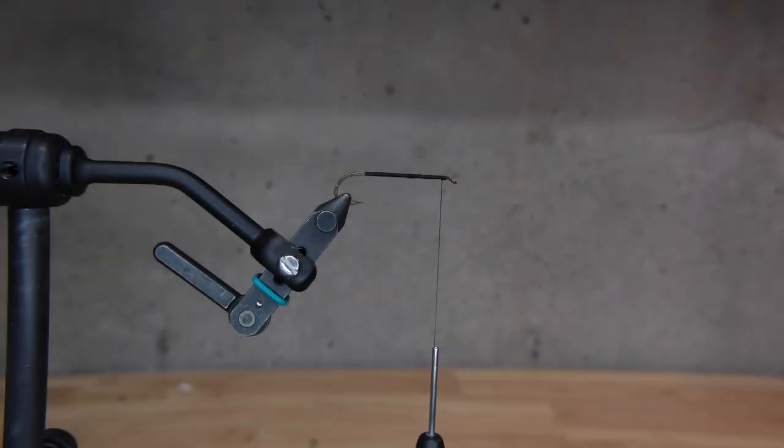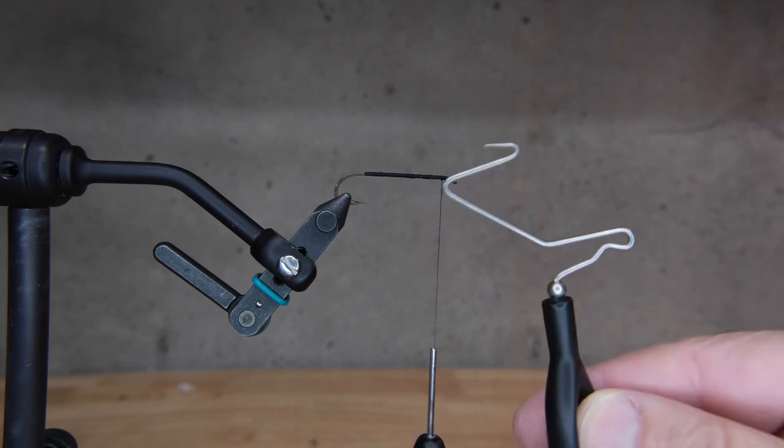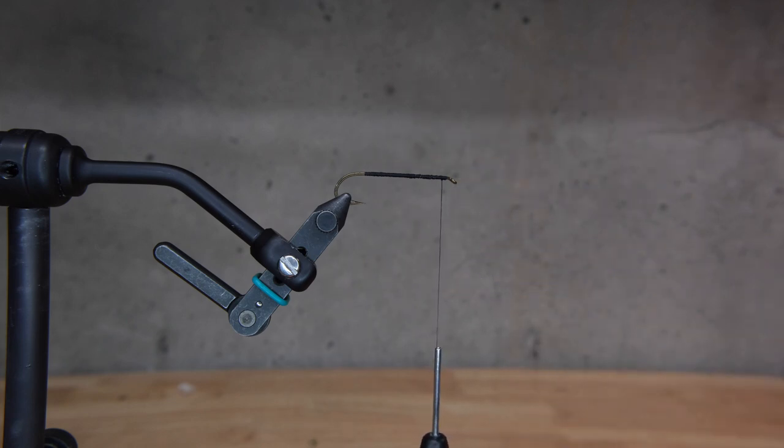All right, once you get your fly complete, then you have to find a way to finish it. You can use your whip finish tool, also known as the instrument of torture, if you'd like, or you can do half hitches. I'm going to show you how to do that with your fingers.